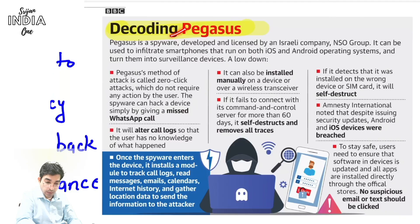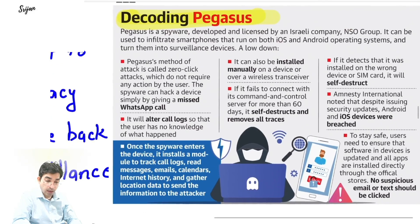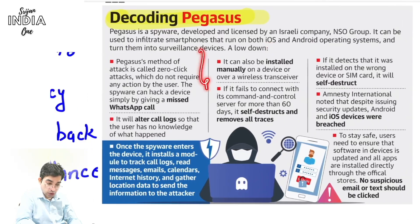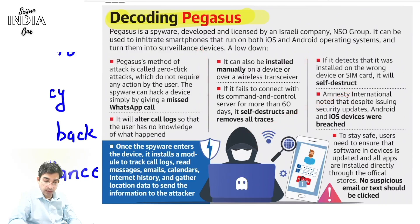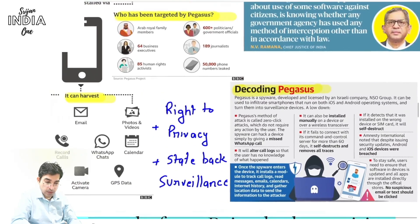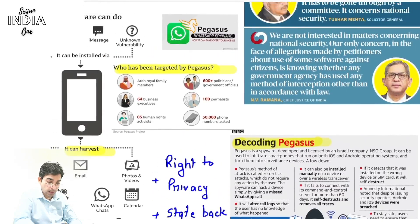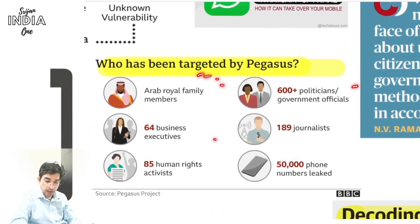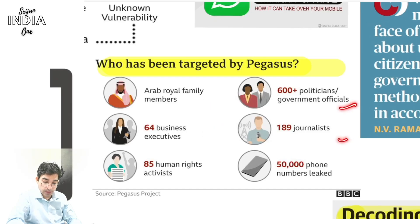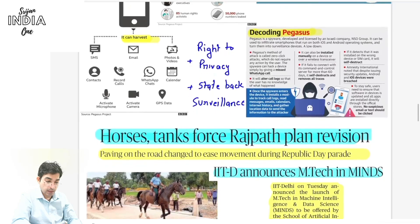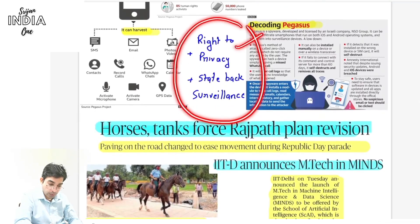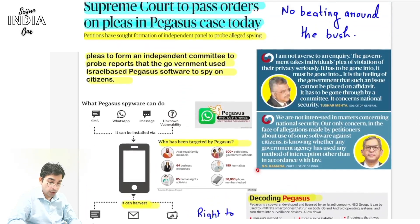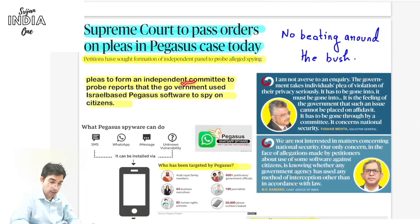To decode Pegasus: it is a spyware built by Israeli company NSO Group. It can attack both iOS and Android. It is a zero-click attack — any user can be hacked without interacting. It is also self-destructive, leaving no traces. It is a very sophisticated piece of software. High-profile people — Arab royal family members, business executives, politicians, journalists — had their phones and WhatsApp tapped. In our context, we link this to the right to privacy and state surveillance, both internal and external security of India.